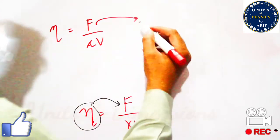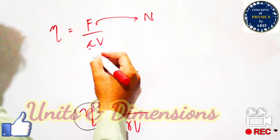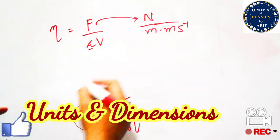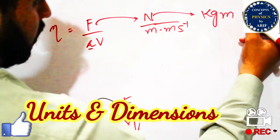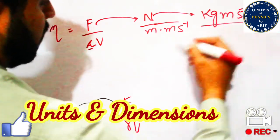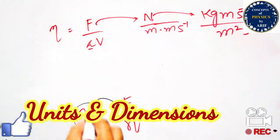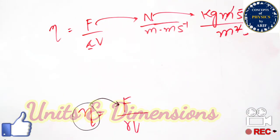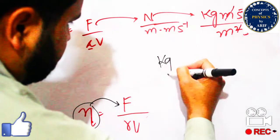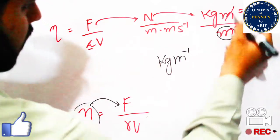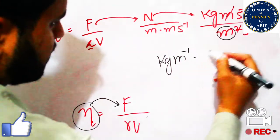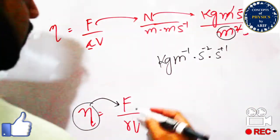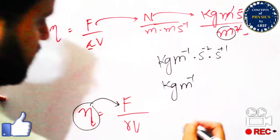The unit of force is newton, the unit of radius is meter, and the unit of velocity is meter per second. Opening up the newton gives kilogram·meter per second squared. Combined with meter (radius) and meter per second (velocity) in the denominator, one meter cancels, leaving the simplified expression as kilogram per meter·second, with s⁻² and s⁻¹ combining to give the final unit.